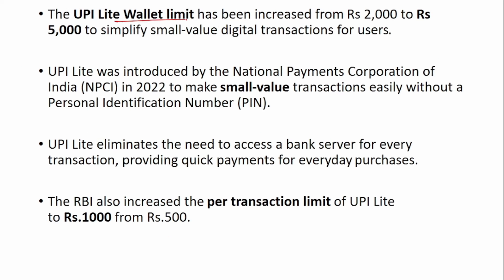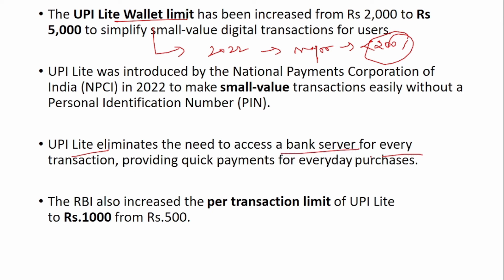Similarly, UPI Light wallet was introduced in 2022 by NPCI. It was observed that the majority of UPI transactions were below Rs. 200. So NPCI introduced a wallet — users upload money into the wallet once in a while, and from there it is transferred to the person or merchant. This eliminates the need to hit the bank server for every transaction, providing quick payments for everyday purchases. Hitting a bank server is costly and time-consuming; with the wallet, it is faster and cheaper.